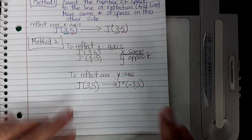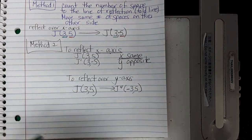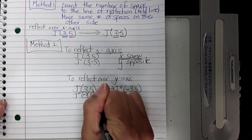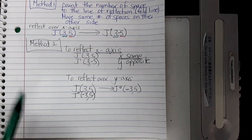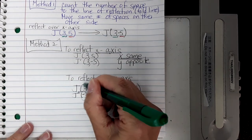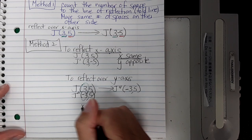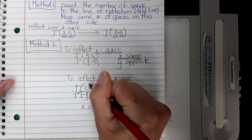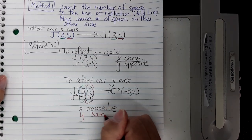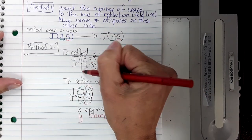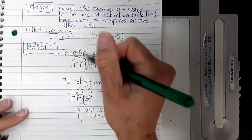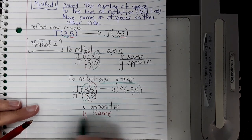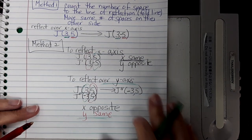When we reflected (3, 5) over the y-line and counted the same number of spaces (3), we ended up with (negative 3, 5). J double prime became negative 3 and the 5 stayed the same. When we reflect over y, the x-part becomes the opposite and the y-part remains the same — versus reflecting over x, where the x stays the same and the y becomes the opposite. When you reflect over y, the y-part stays the same. That's a good rule for you to use — either method will work.